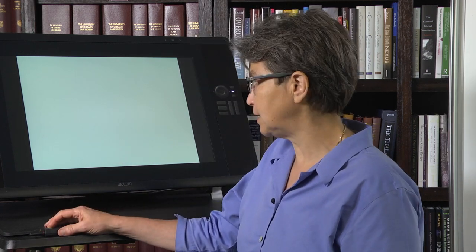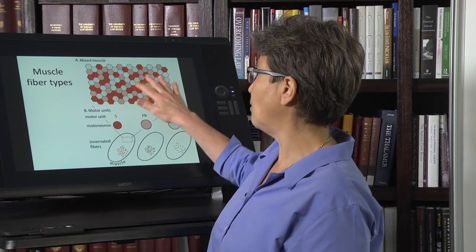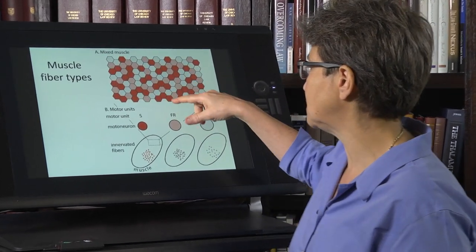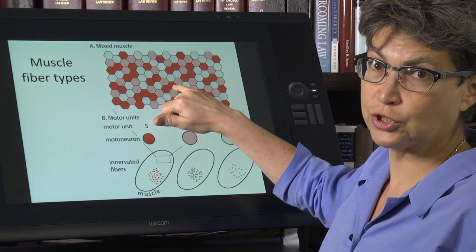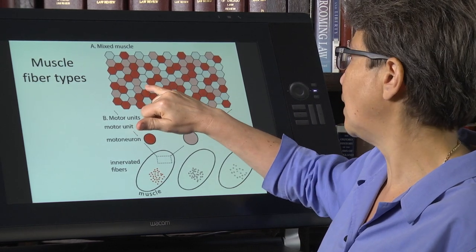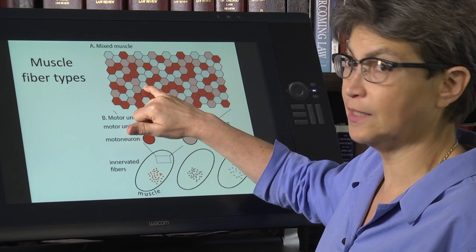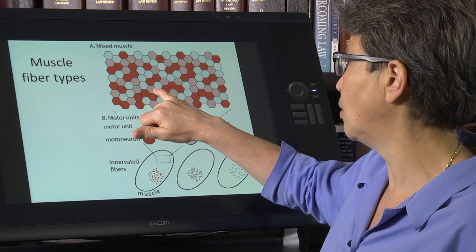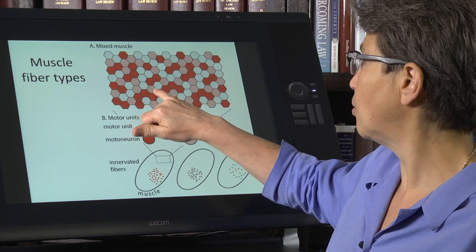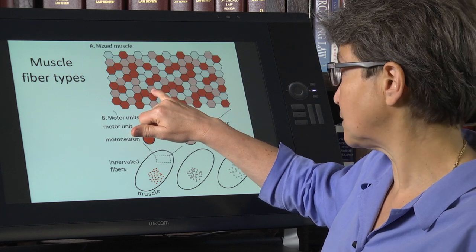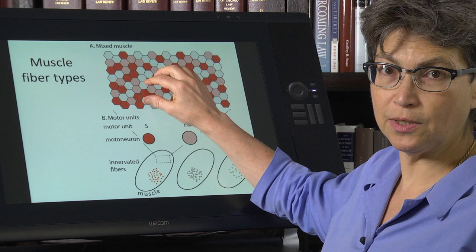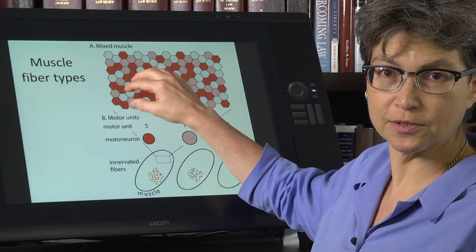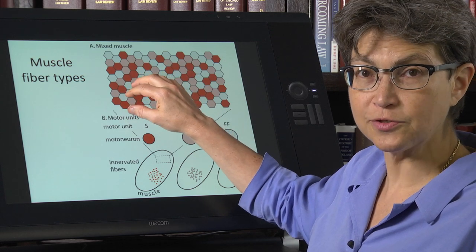And the way this looks is that you have a muscle that is mixed, and I've done this so that the red are slow fibers, the white are fast glycolytic, and the pink are the oxidative glycolytic fast fibers. They should be different sizes, but that was going to be a nightmare of getting this hexagonal pattern to fit, so I didn't do that.